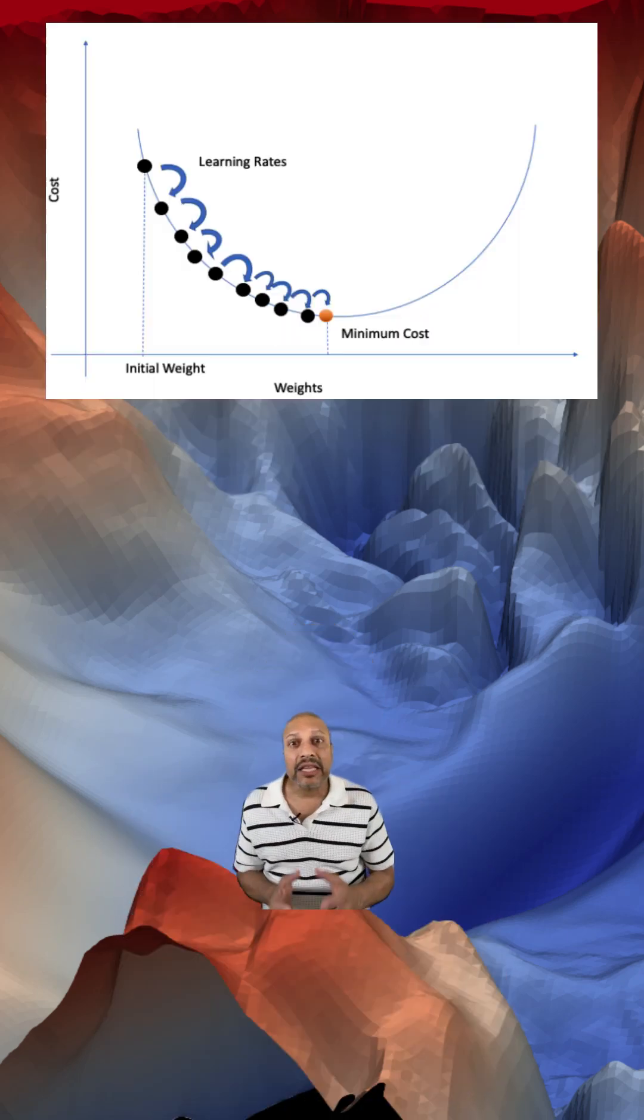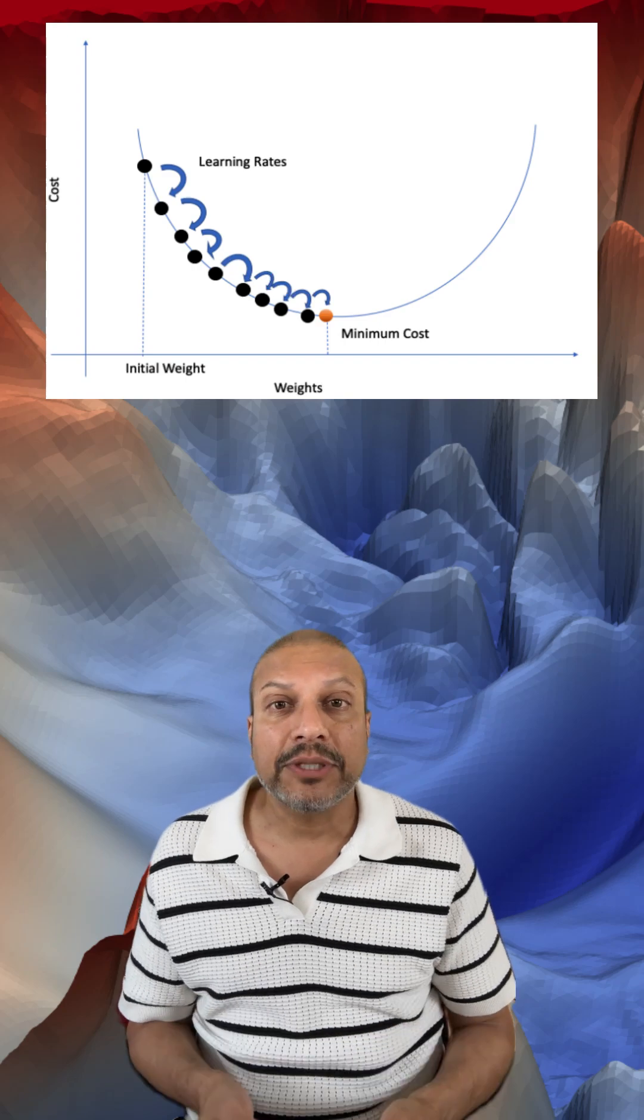To mathematically reach that low point, we use optimizers. Optimizers typically follow the slope of the landscape, taking careful steps based on how steep the path is. That's what something like Adam does that's widely used.